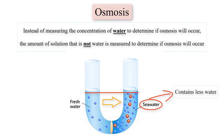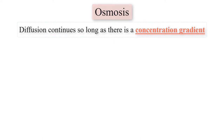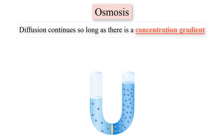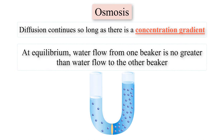Will osmosis continue until all the water from the pure water beaker has diffused into the salt water beaker? No. Diffusion continues so long as there is a concentration gradient. Once enough water has diffused into the salt water beaker that there are equal amounts of water in both beakers, water flow will reach an equilibrium where there is no net movement. This does not mean no movement of water between beakers occurs at all, but that at equilibrium, water flow from one beaker is no greater than water flow to the other.